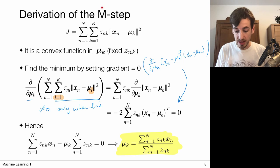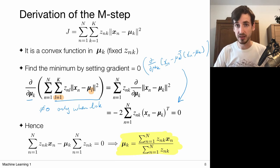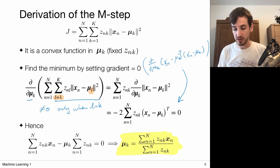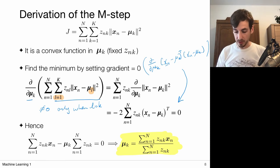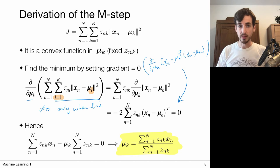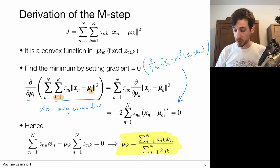This confirms that the M-step minimizes the objective function J. In that sense it could be called a minimization step, but we call it the maximization step because in the probabilistic setting, this M-step actually solves the maximum likelihood of the probability distribution — something we'll discuss in the upcoming video. For now, it's clear that k-means minimizes J step by step via both the E-step and the M-step.